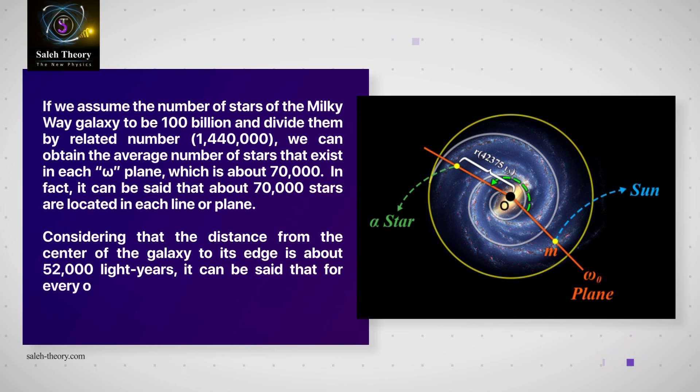If we assume the number of stars of the Milky Way galaxy to be 100 billion and divide them by the related number (1,440,000), we can obtain the average number of stars that exist in each omega plane, which is about 70,000. In fact, it can be said that about 70,000 stars are located in each line or plane.